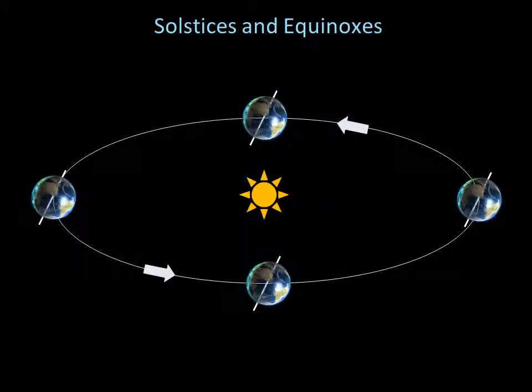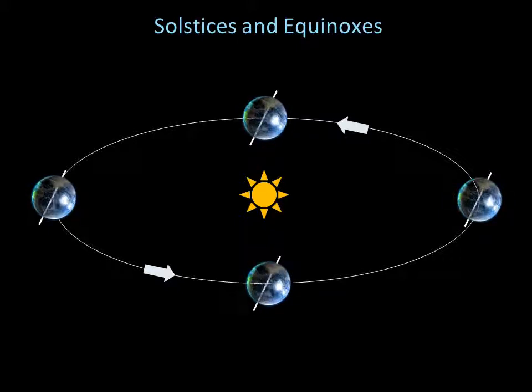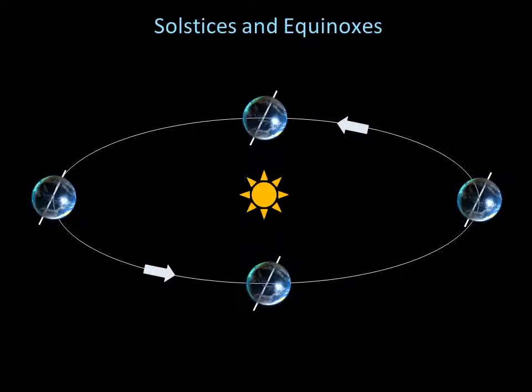To help us mark the changing seasons, we define four special moments in the year, each of which corresponds to four special positions in Earth's orbit.